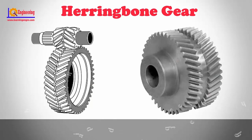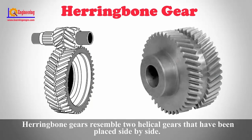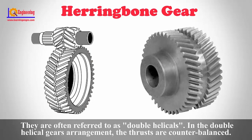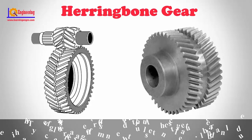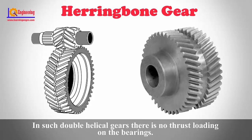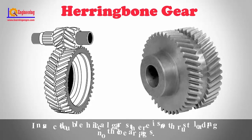Herringbone gears resemble two helical gears that have been placed side by side. They are often referred to as double helicals. In a double helical gear arrangement, the thrusts are counterbalanced. In such double helical gears, there is no thrust loading on the bearings.